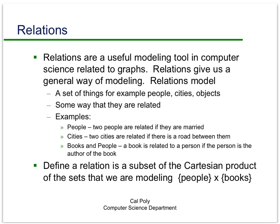For example, we could have a set of people and say two people are related if they are married to one another. Or we could have a set of cities — say all United States cities bigger than a certain size — and say two cities are related if there's a road between them. We're not restricted to just one type of thing: we could have books and people and say a book is related to a person if the person is the author of the book.